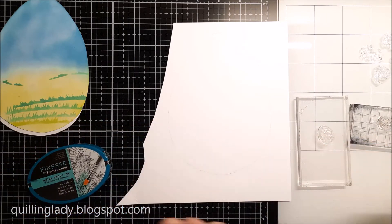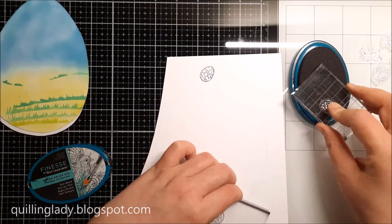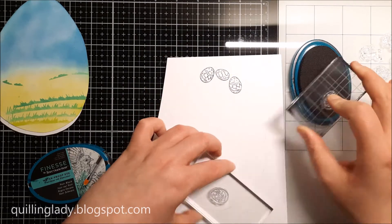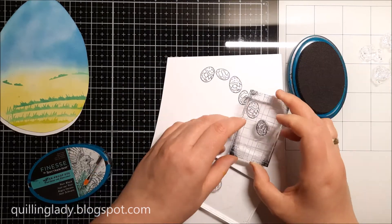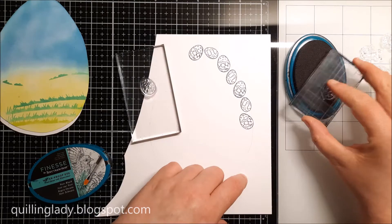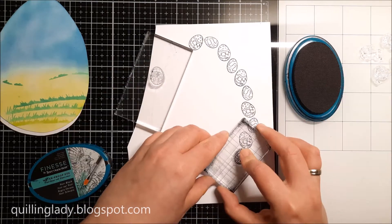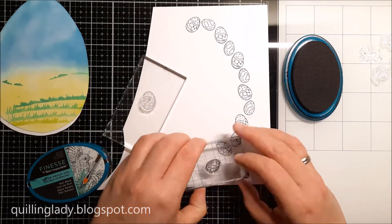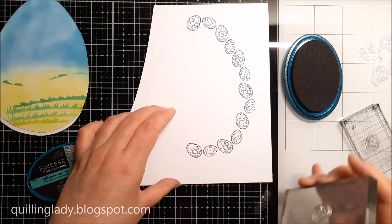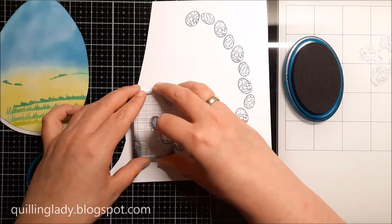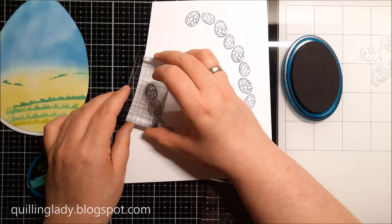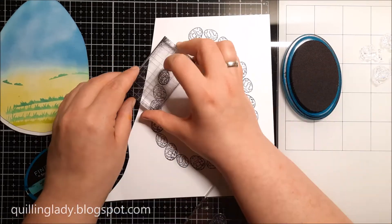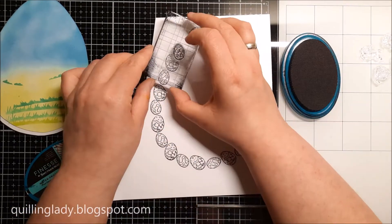To stamp all my Easter eggs, going on the pencil line which I created using a template, I'm using waterproof black ink by Spectrum Noir because later on I'm going to use Zig markers to color in all my small images, and that's why I need to have waterproof ink.